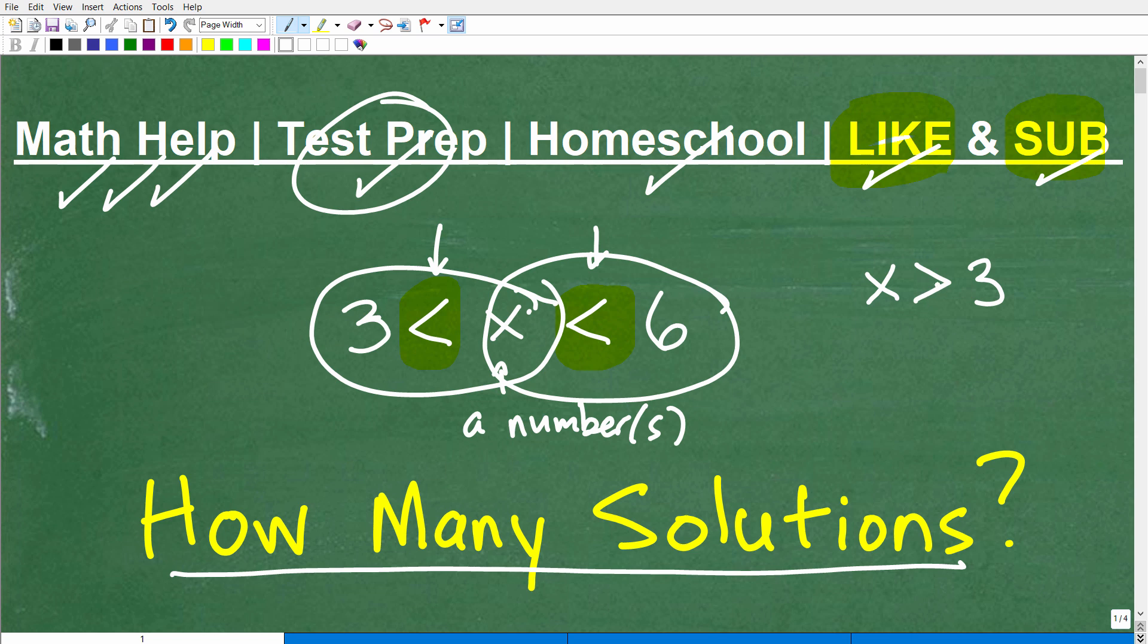this is what? Well, this doesn't look like an L. This is the other one. So this is greater than. So this is X is greater than three or a number or numbers that are greater than three. So that's how this right here would be interpreted.